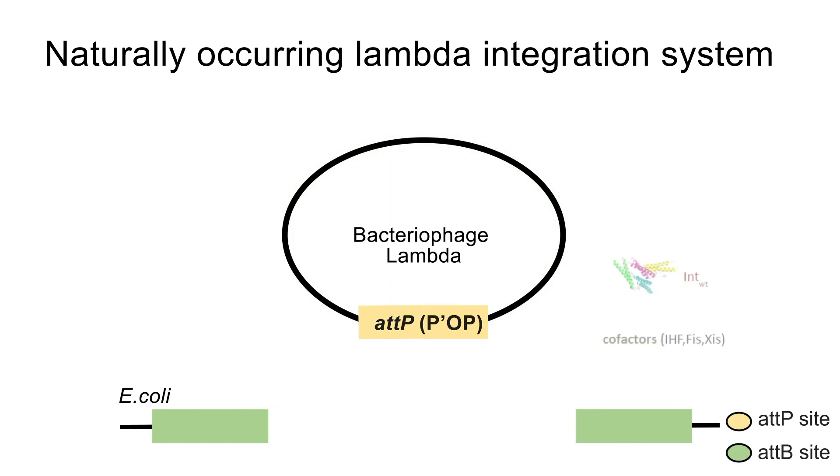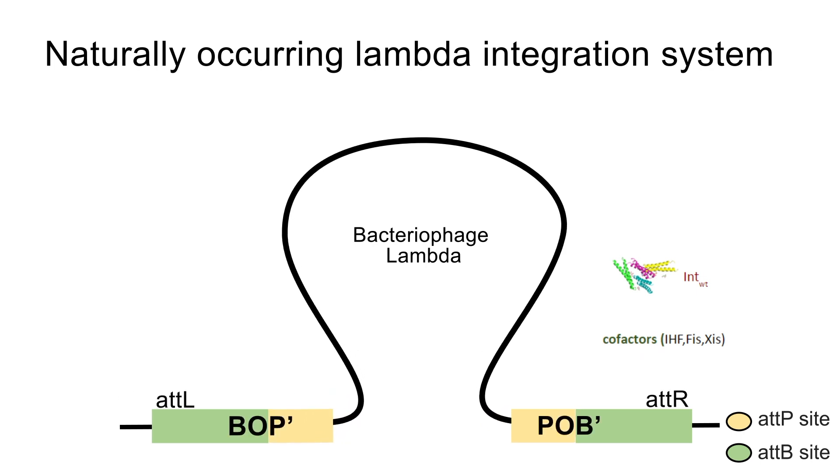This is done using two DNA attachment sites: attB on the bacterial chromosome and the more complex attP located on the phage genome, with the help of lambda integrase along with other cofactors.